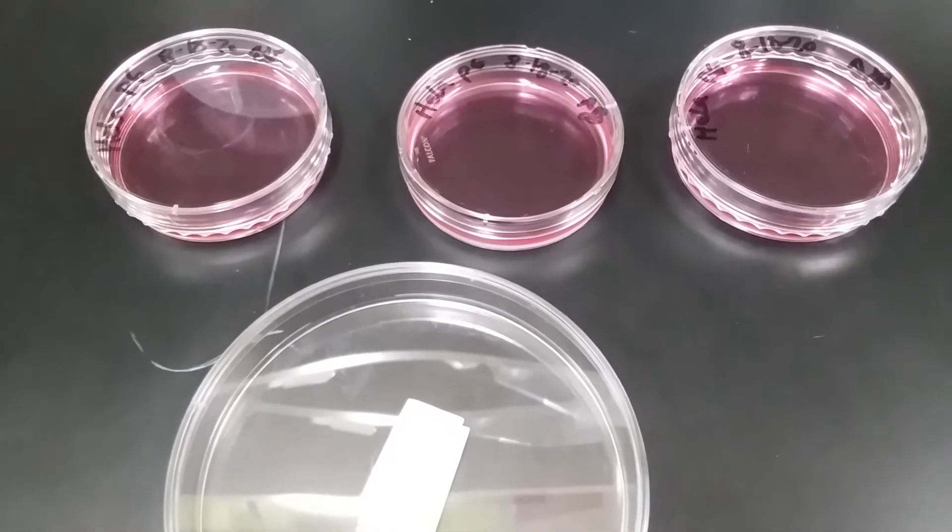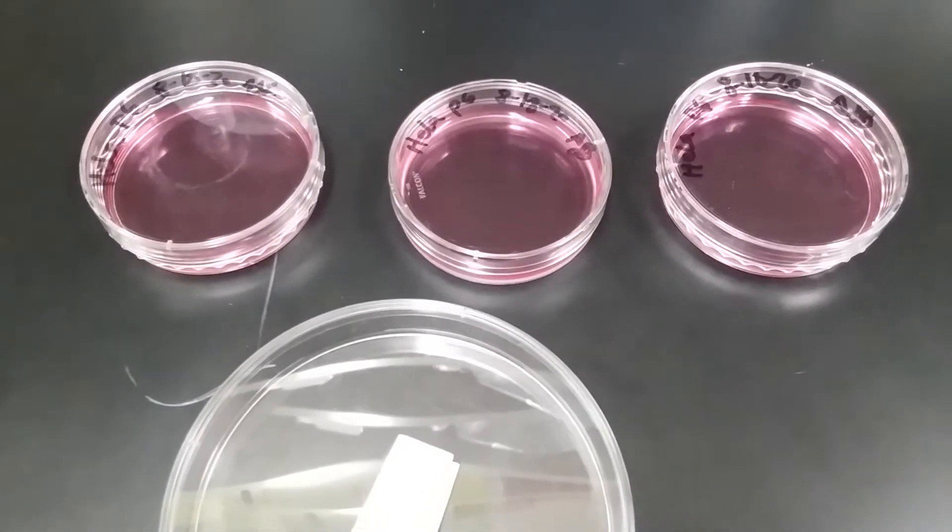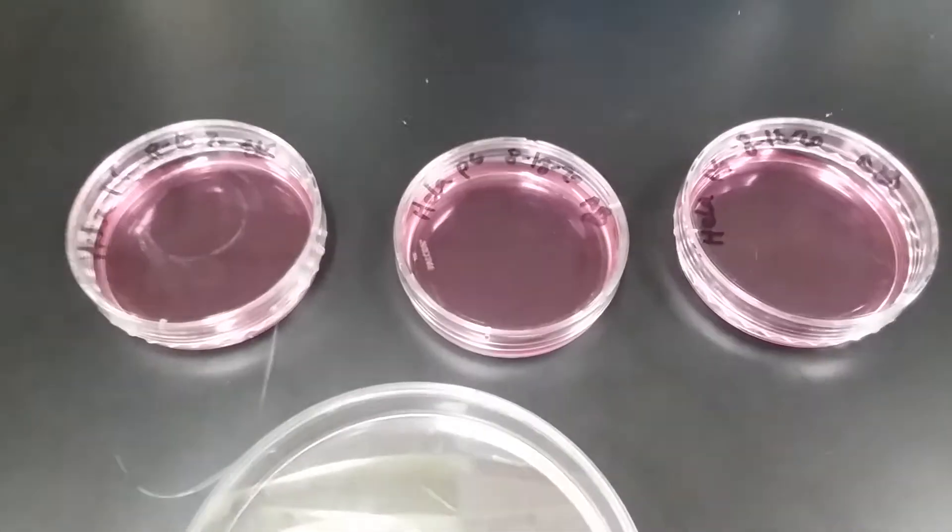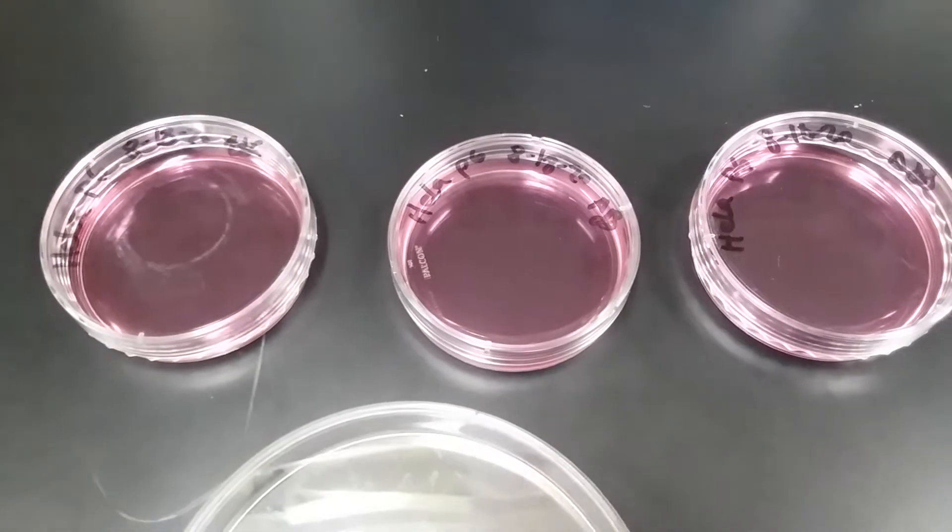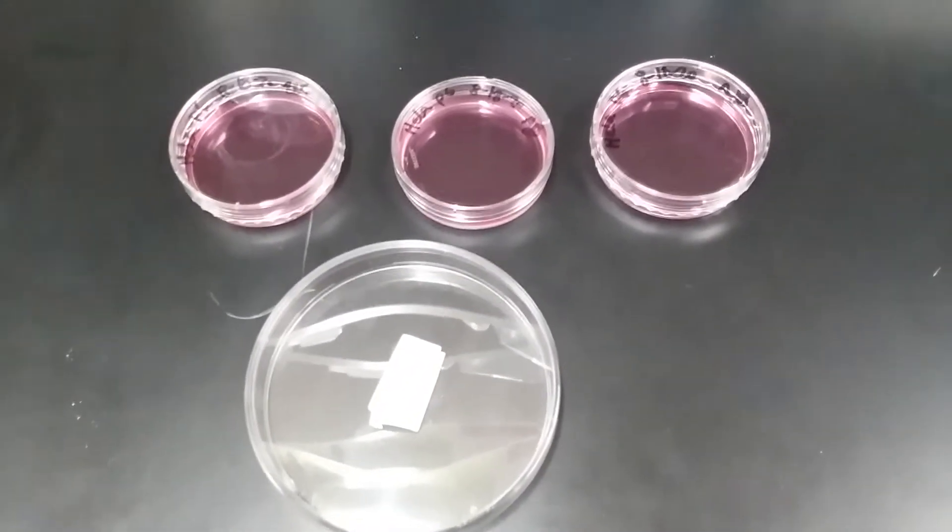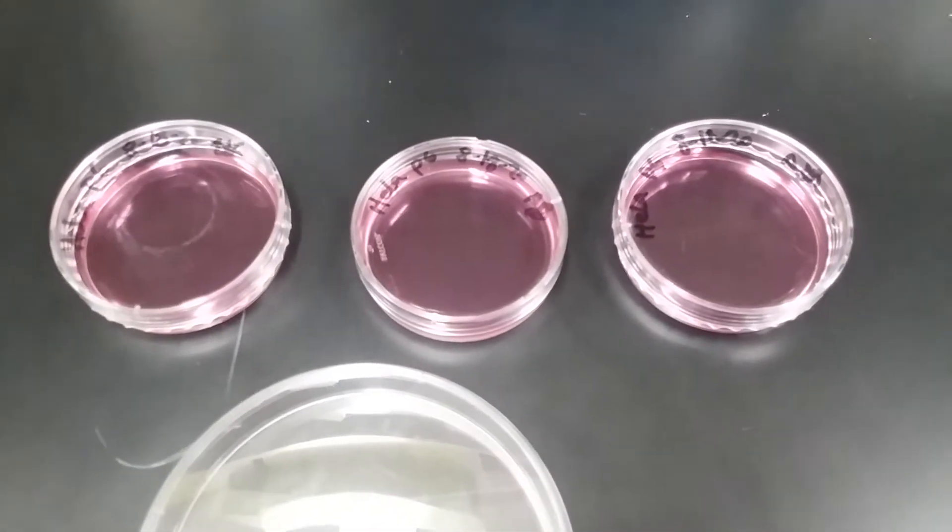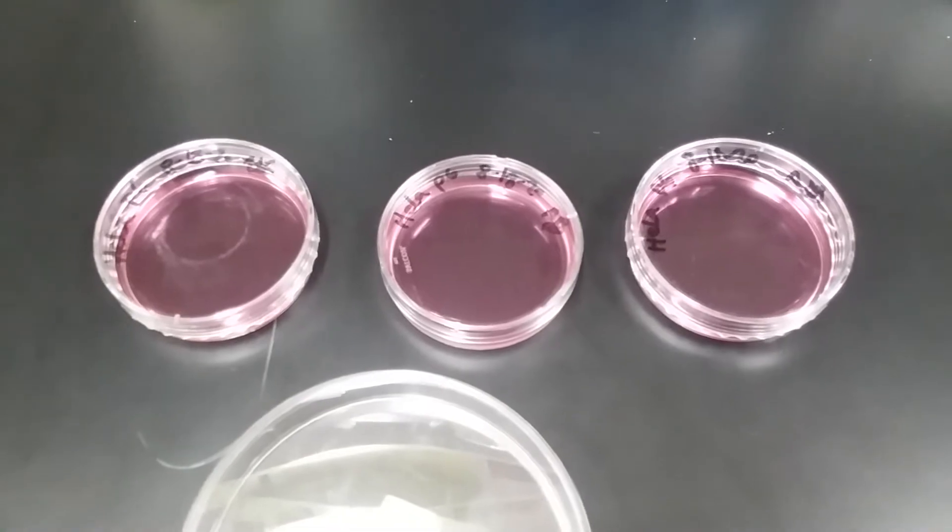We are going to stain some cells for cytoskeleton, in particular microfilaments, and we start off with three C60s of cells. To put it in perspective, the front plate is a C100. The very first step that you take is you go to the microscope and make sure you have cells.